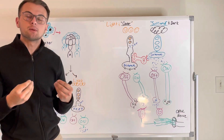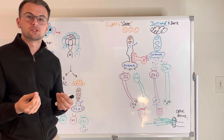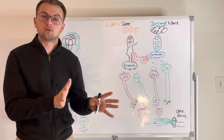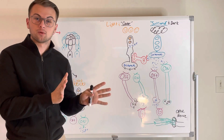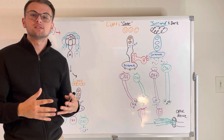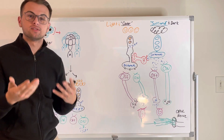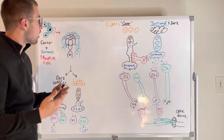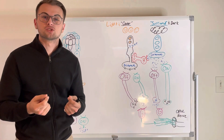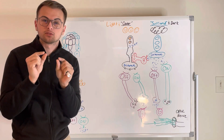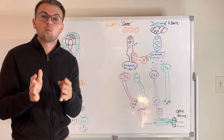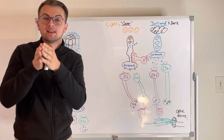If we recall that some bipolar cells are usually excitatory when activated and other bipolar cells are usually inhibitory when activated, we can start to develop the concept of on and off centers. On and off centers are like little pieces of information that help us detect exactly where light is and where light isn't.